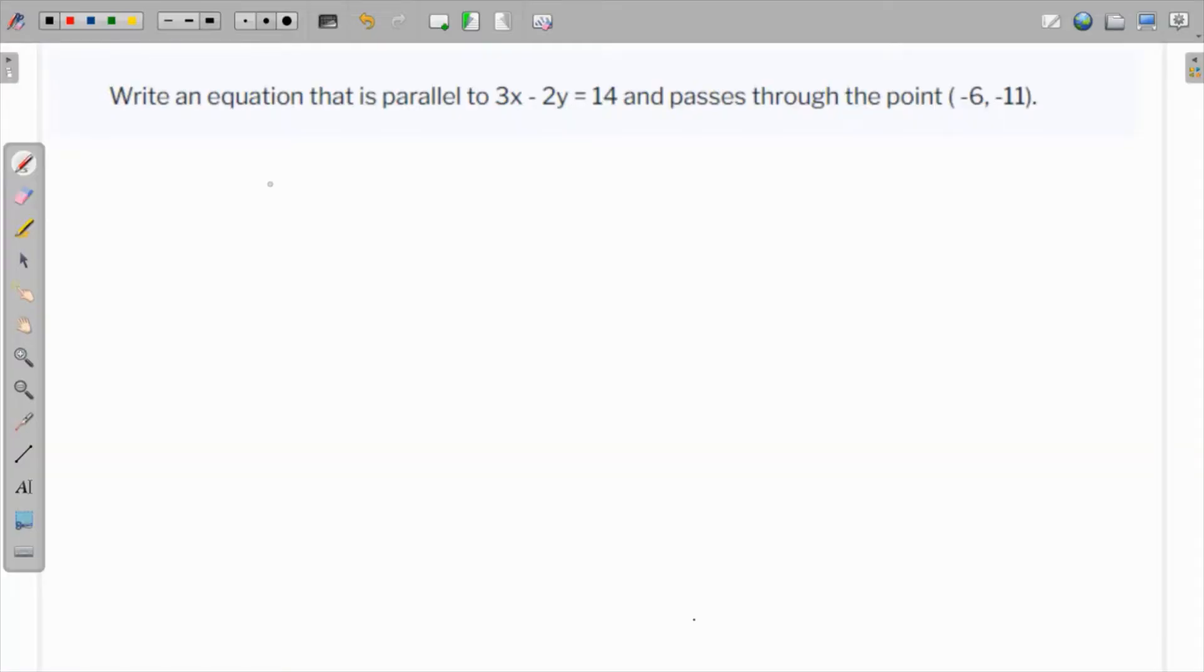In this question we have to write an equation of a line that is parallel to this particular line and it passes through this particular point. So what is the slope of this line? This is 3x minus 2y is equal to 14.